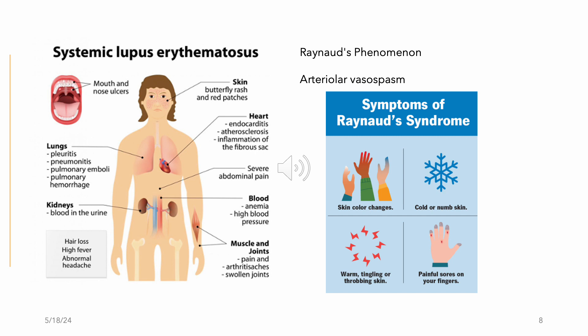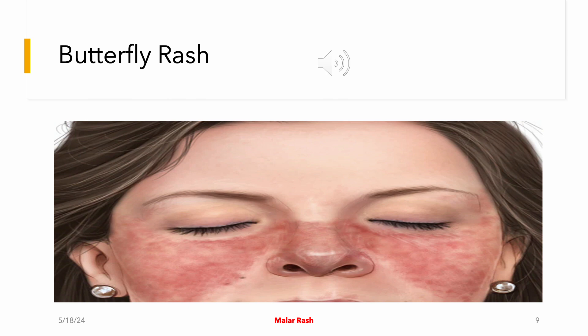Raynaud's phenomenon refers to arterial vasospasm and can occur in people with connective tissue or autoimmune disorders. You will see skin color changes, usually in the hands — the skin goes white, then red or blue. It's triggered by cold exposure, causing cold or numb skin that then turns warm, tingling, and throbbing, resulting in painful sores on the fingers. The malar or butterfly rash on a person with lupus is a classic presenting finding.